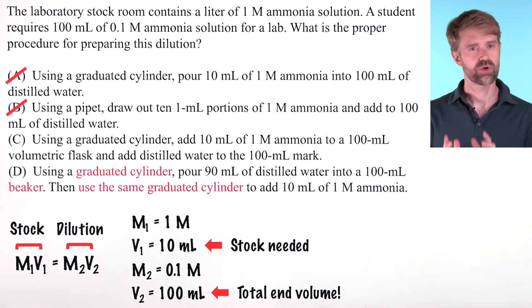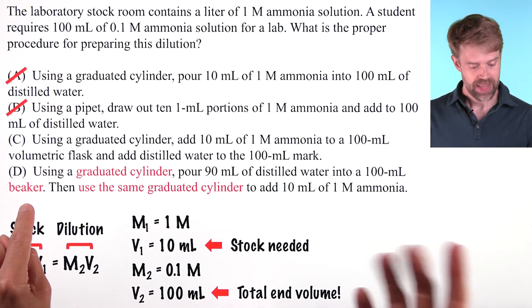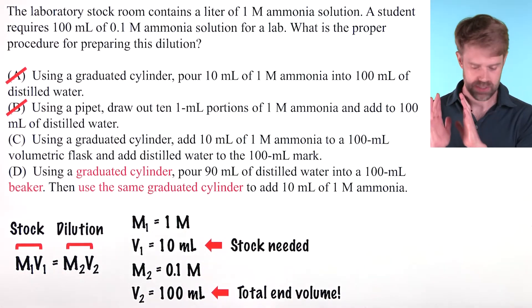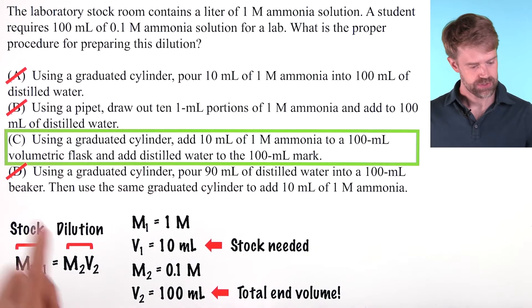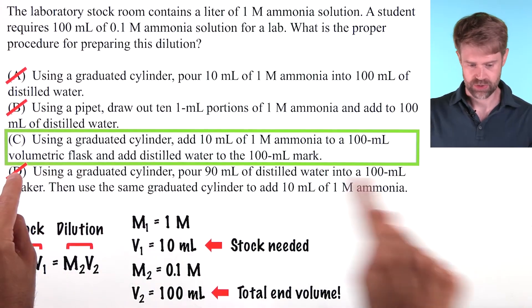Choice D, as we said, has the correct math, but the procedure is a disaster. They're using beakers and reusing graduated cylinders and adding the chemicals out of order. It's just a total mess. So this is wrong, even though it has correct math, and choice C is the correct answer.